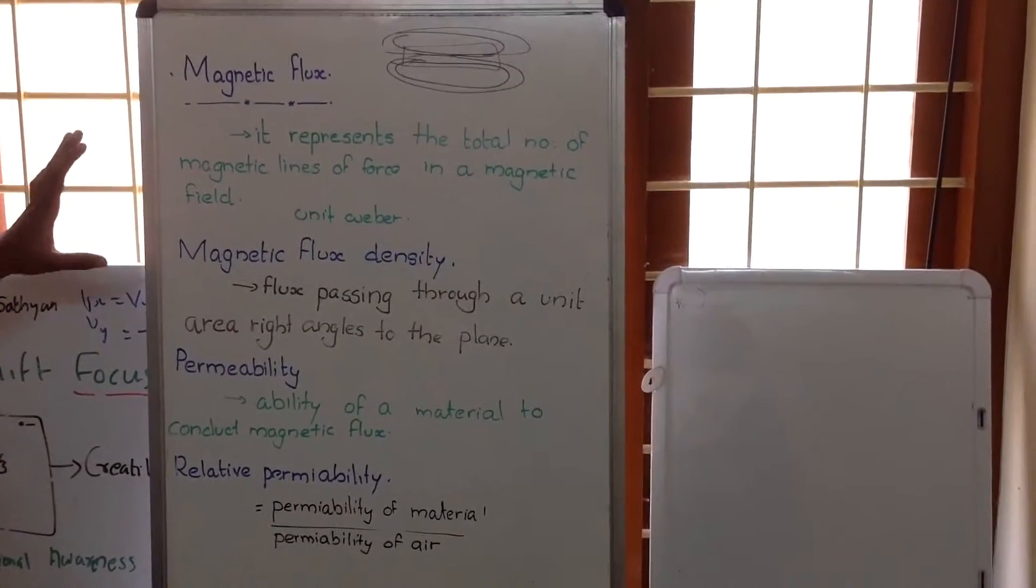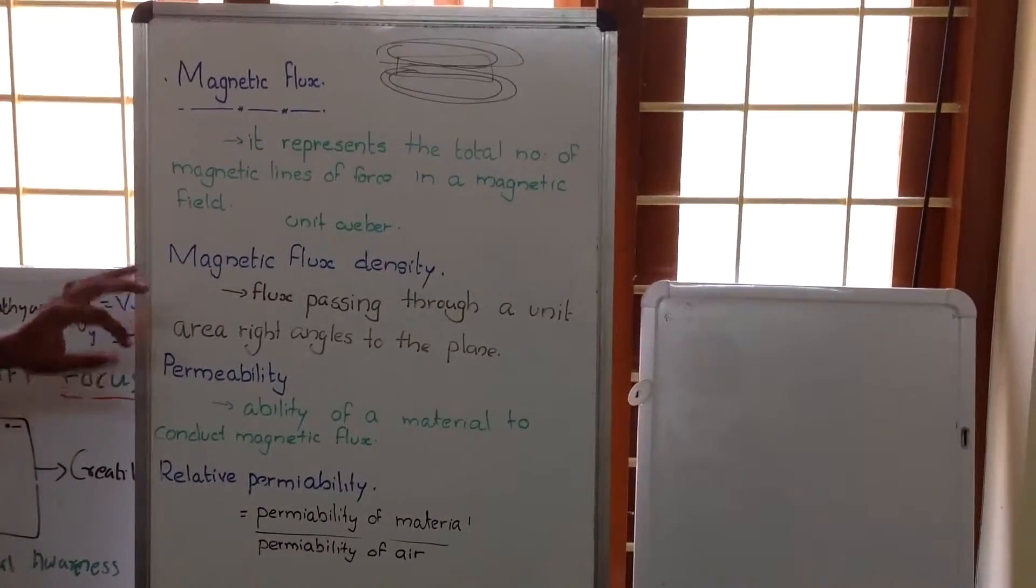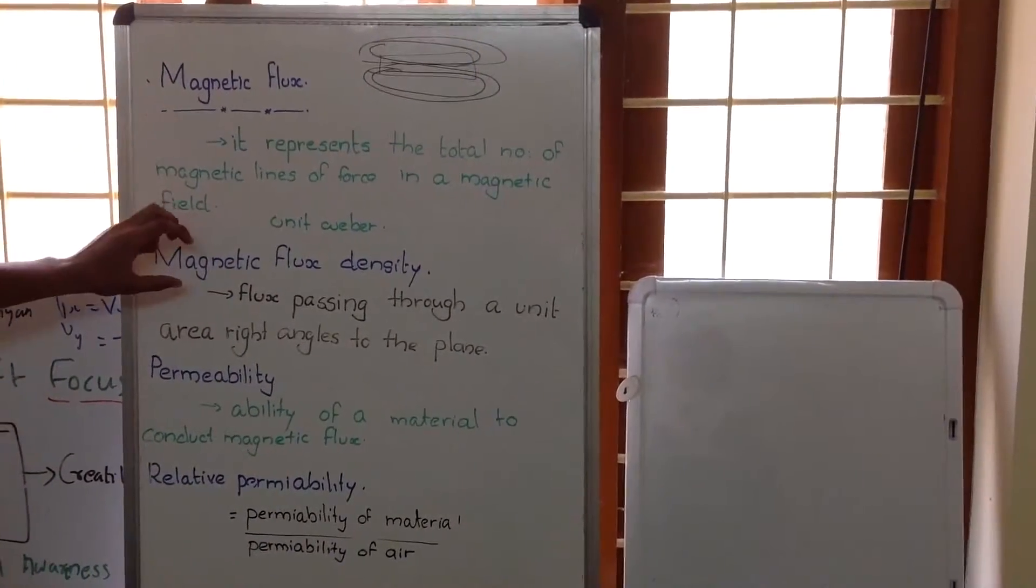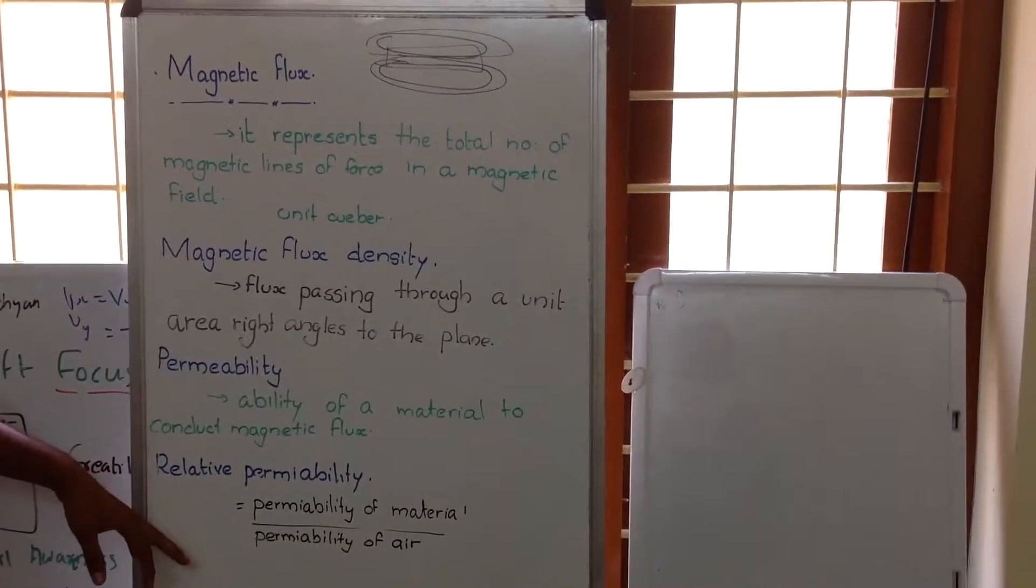Let's talk about some basic terms in electrical engineering: magnetic flux, magnetic flux density, permeability, and relative permeability.